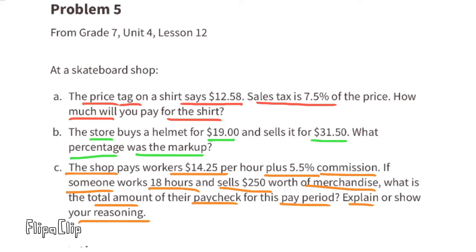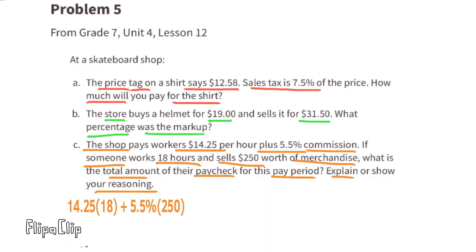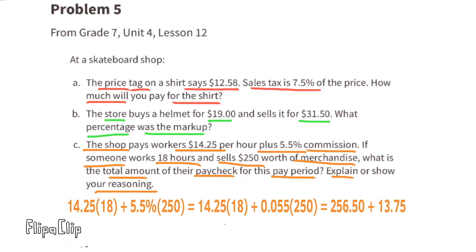Part c: The shop pays workers $14.25 per hour plus 5.5% commission. If someone works 18 hours and sells $250 worth of merchandise, what is the total paycheck? We calculate: 14.25 times 18 plus 0.055 times 250, which equals $256.50 plus $13.75. Their total for that pay period would be $270.25 — actually more than the $250 worth of merchandise sold, so this company would go out of business quickly.